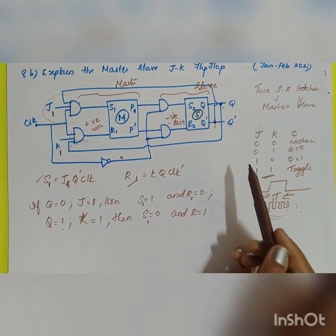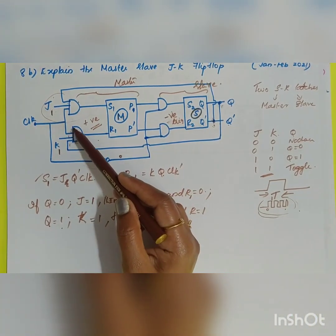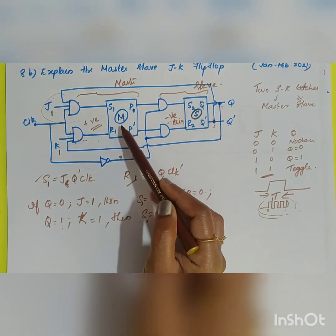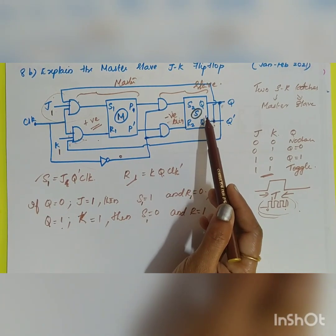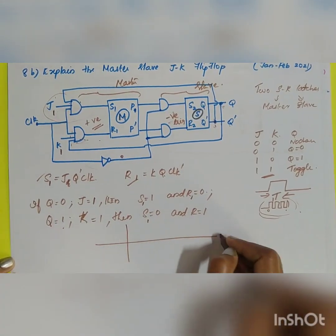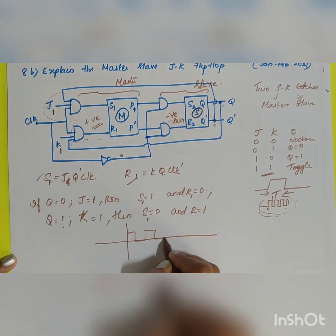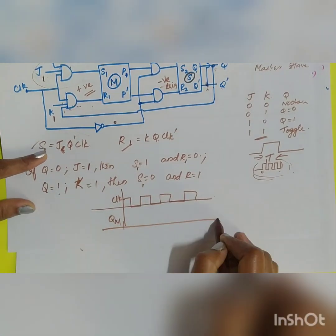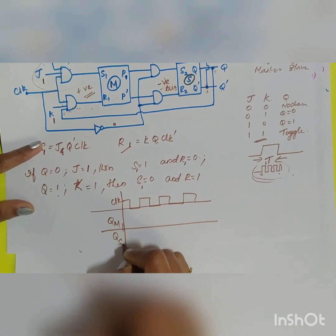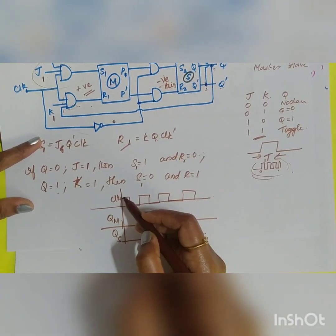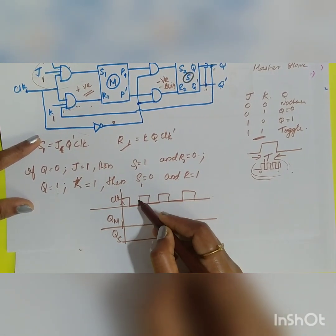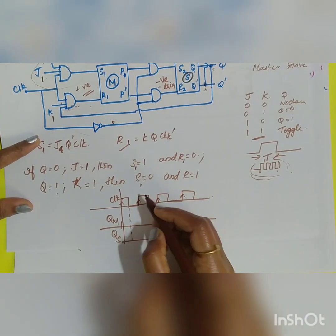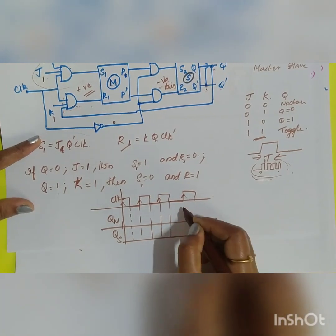The working principle is: initially when clock=1, the slave is isolated and the master operates, holding the signal. During the next clock transition, the slave operates. In the timing diagram, the master output goes high during the rising edge and the slave output responds during the falling edge.